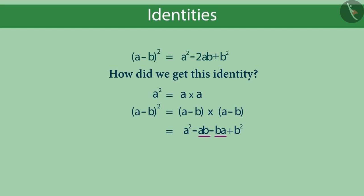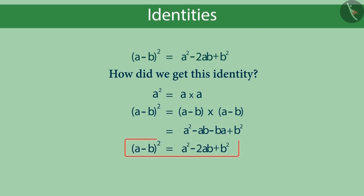Observe the two terms in the middle. Since ab is equal to ba, they can be combined. So this is how we got this identity.